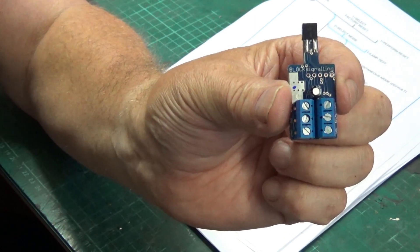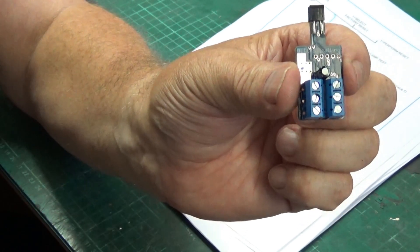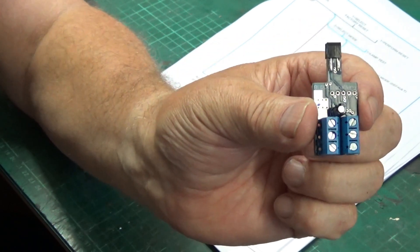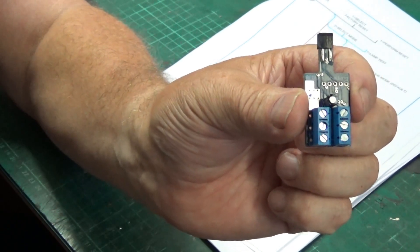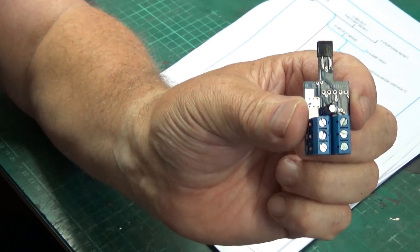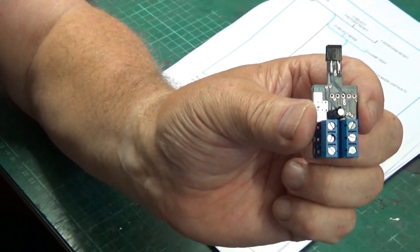There's a holdover time which you can set, and this is used to ignore gaps between coaches and wagons and what have you, so the detector doesn't see the gap and think that the line's unoccupied when in actual fact it still is. So that prevents it from resetting back to green too early.